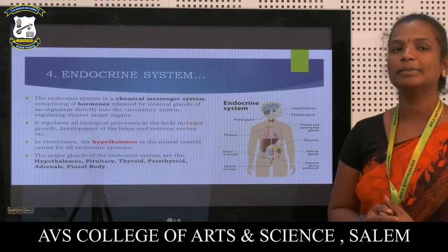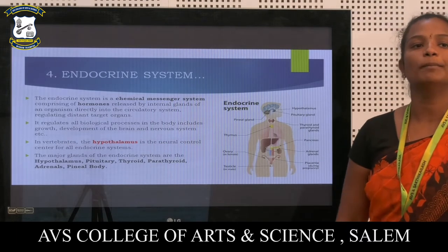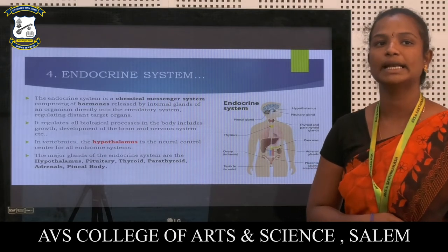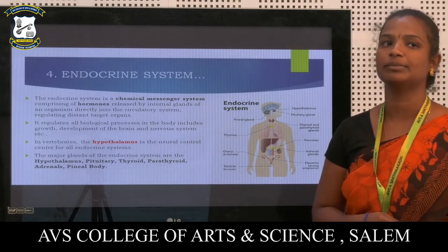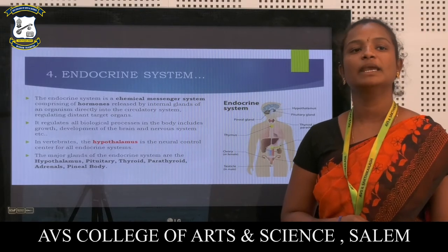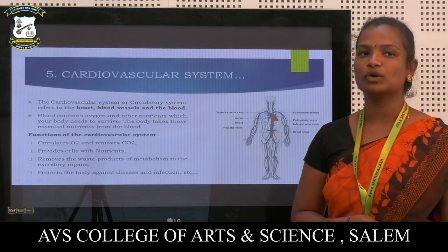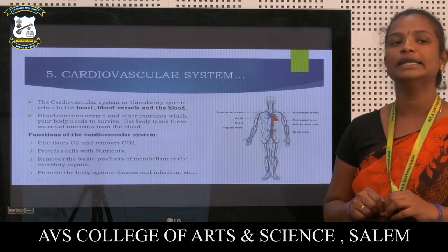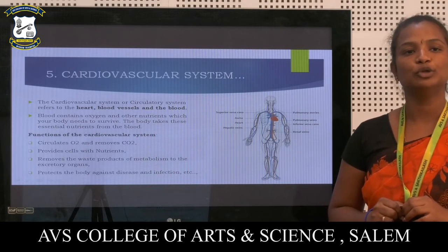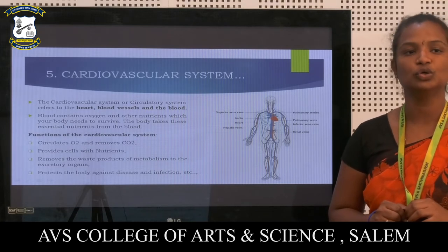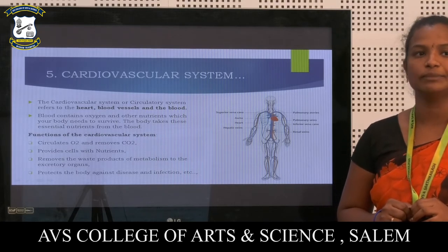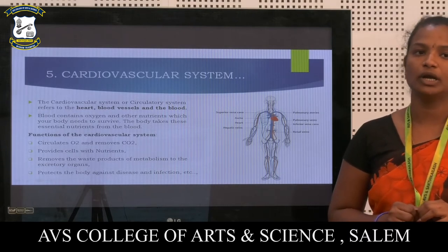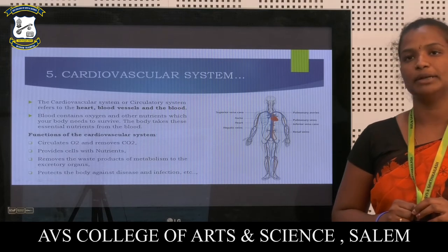The endocrine system is a chemical messenger system, comprising hormones released by internal glands of the organism directly into the circulatory system, regulating distant target organs. It regulates all biological processes in the body, including growth, development of the brain and nervous system, etc. In vertebrates, the hypothalamus is the neural control center of the endocrine system. The major glands of the endocrine system are the hypothalamus, pituitary, thyroid, parathyroid, and adrenal glands.